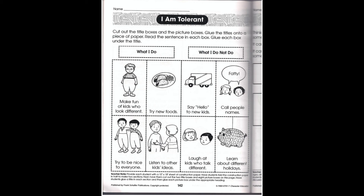Your options are: try new foods, say hello to new kids, call people names, try to be nice to everyone, listen to other kids' ideas, laugh at kids who talk differently, and learn about different holidays. So you get to organize these based on what you do and what you do not do. Listen to your heart — if you think you do it or you do not do it, then put it in that category.